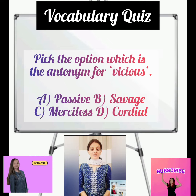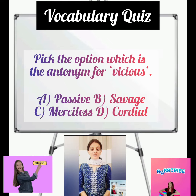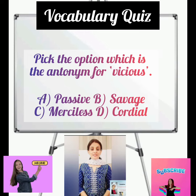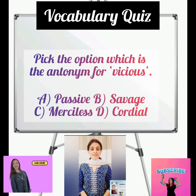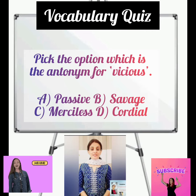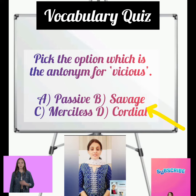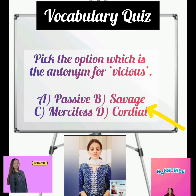Pick the option which is the antonym for vicious. Vicious ka matlab hota hai katu ya dweish puran insan. Options are passive, savage, merciless, and cordial. Cordial means suhaard aur bhai chare se bharpur. So the opposite of vicious would be option number D, cordial.